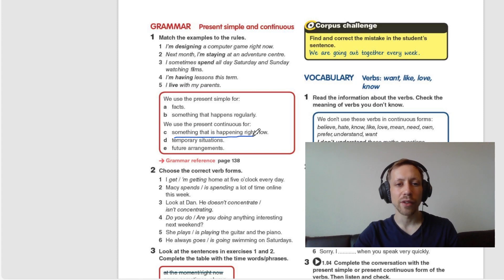Something that is happening right now, is it one, two, or four? We already have This is Simple Present and This is Simple Present. It is number one, I'm designing a computer game right now.